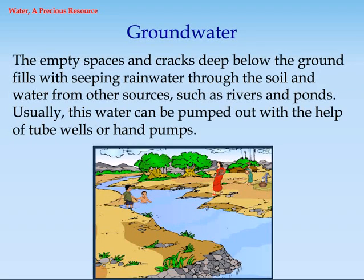Ground water. The empty spaces and cracks deep below the ground fill with seeping rain water through the soil and water from other sources, such as rivers and ponds. Usually, this water can be pumped out with the help of tube wells or hand pumps.